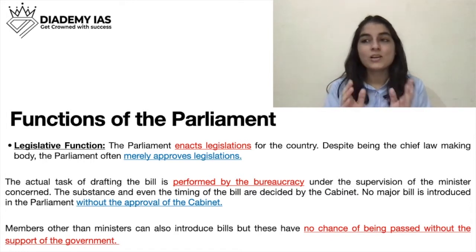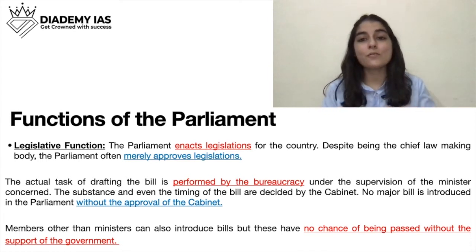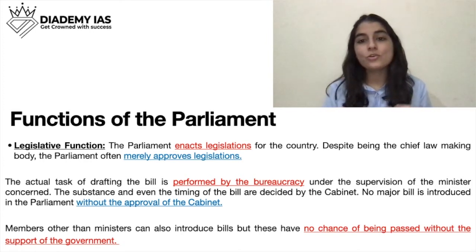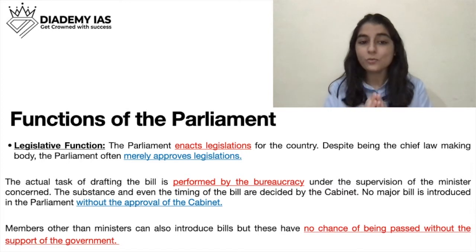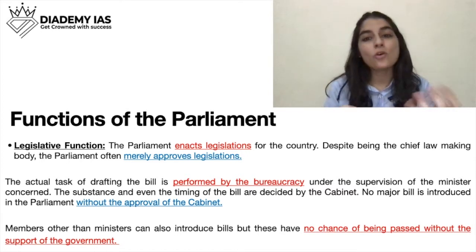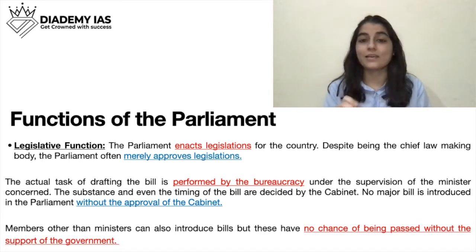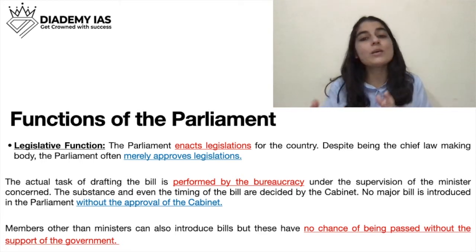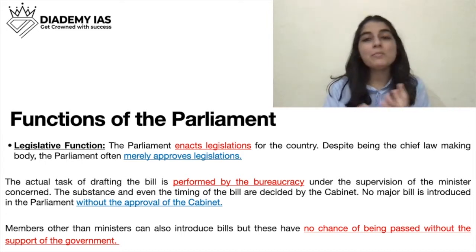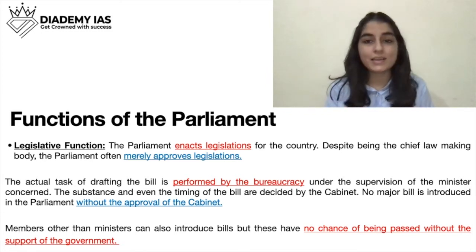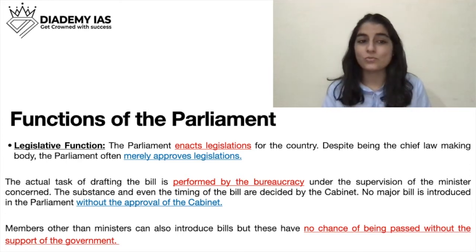A bill is a draft law — a 'kaccha kanoon'. It is introduced first, and when it is passed and the president signs it, it becomes a law. If, for example, a Congress member introduces a bill when BJP has majority, that bill has no chance of being approved. Private member bills — those from non-majority members — are almost impossible to pass.